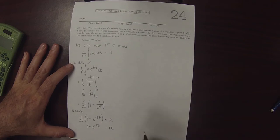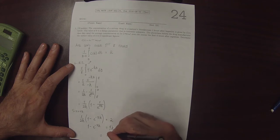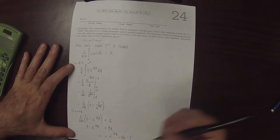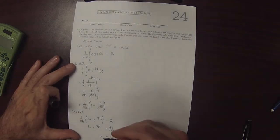And then I'll move everything to 1 side to get 0 equals e to negative 8K plus 4K minus 1. So here now is an equation that needs to be solved for K.